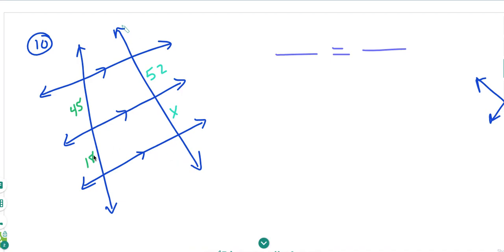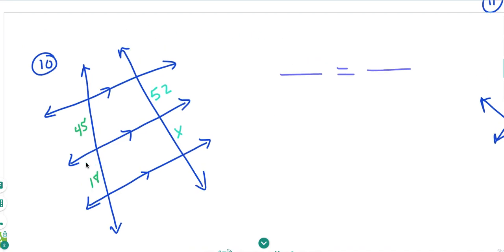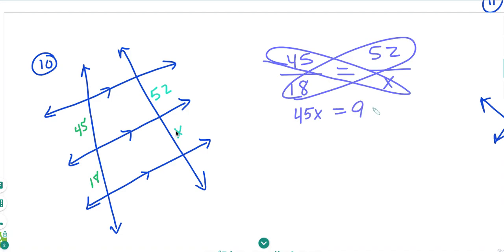So we can set up our proportion of 45 over 18 is equal to 52 over X. Do our butterfly. 45X is equal to 936 divide by 45. X is equal to 20.8.